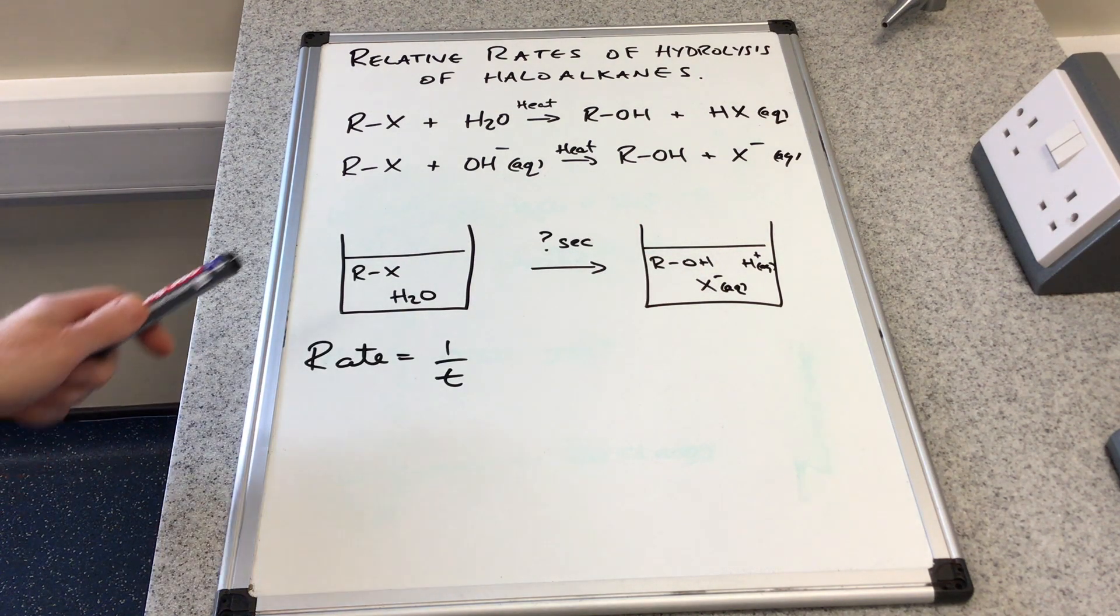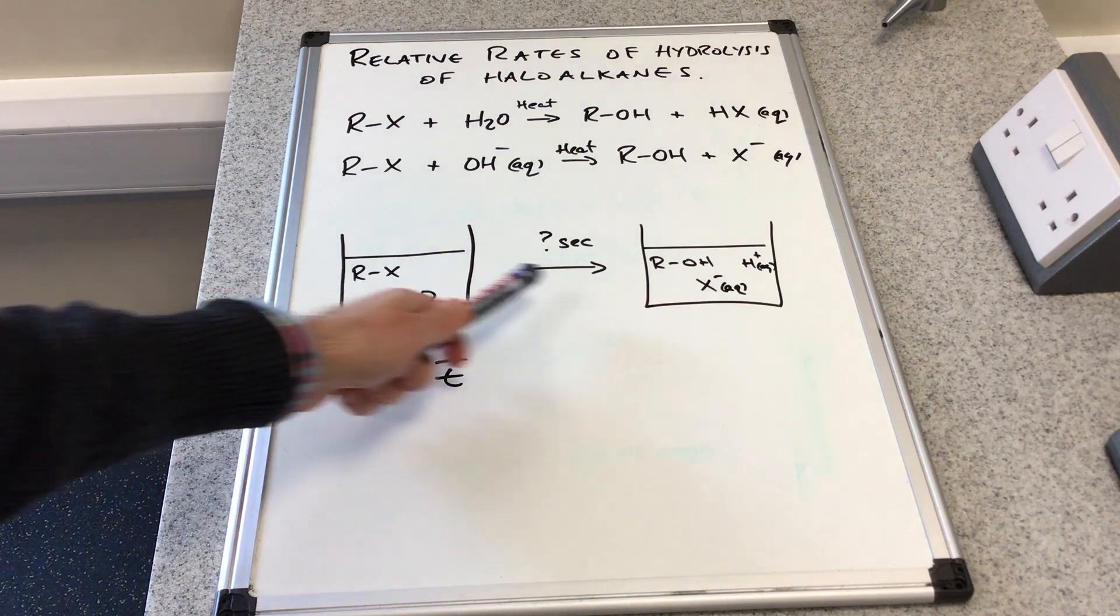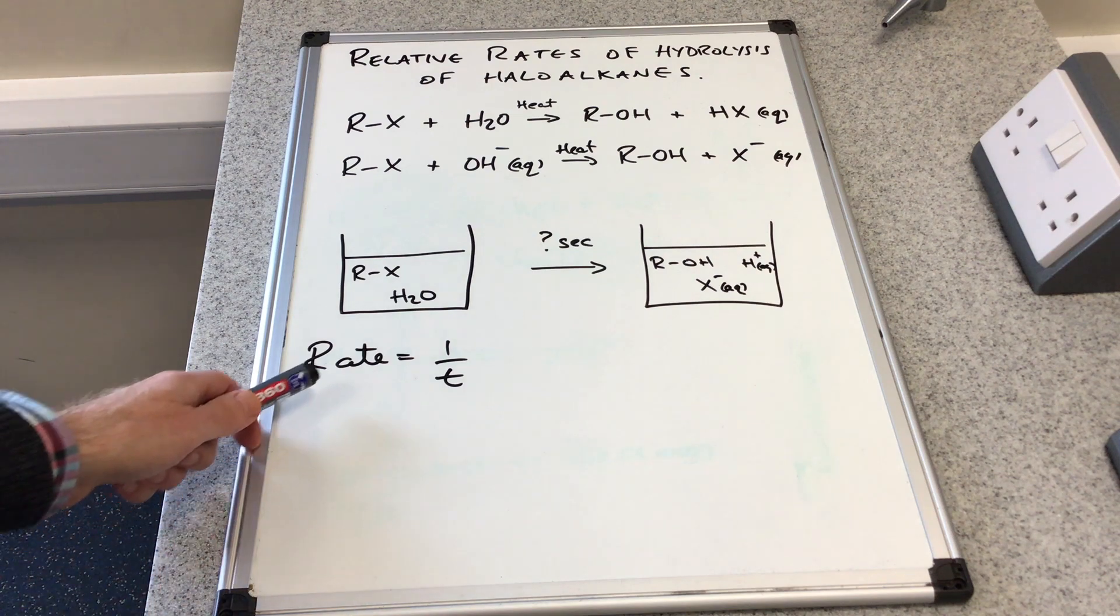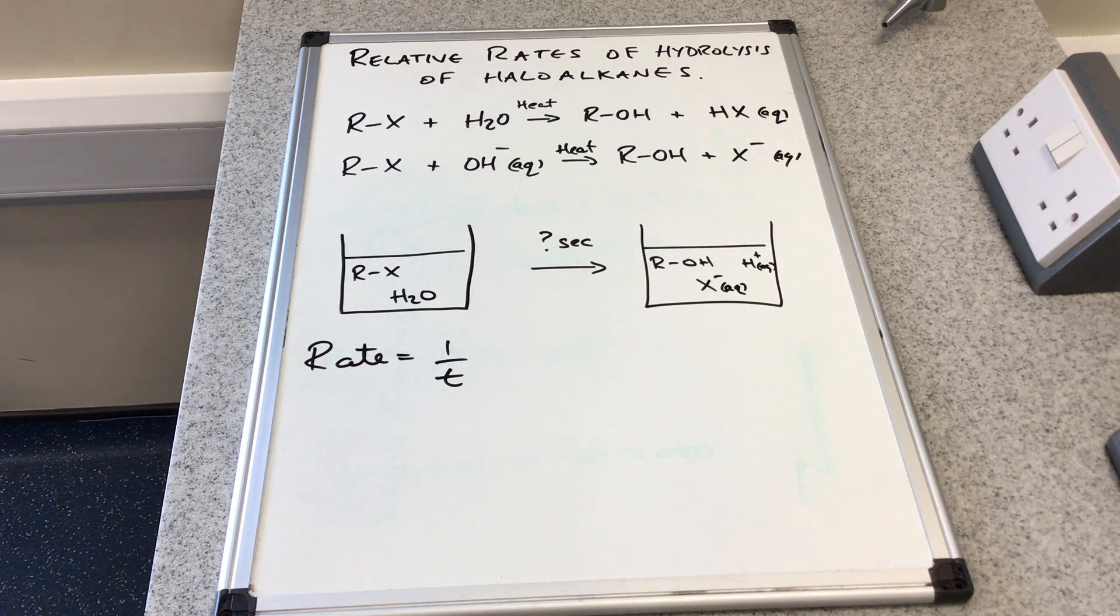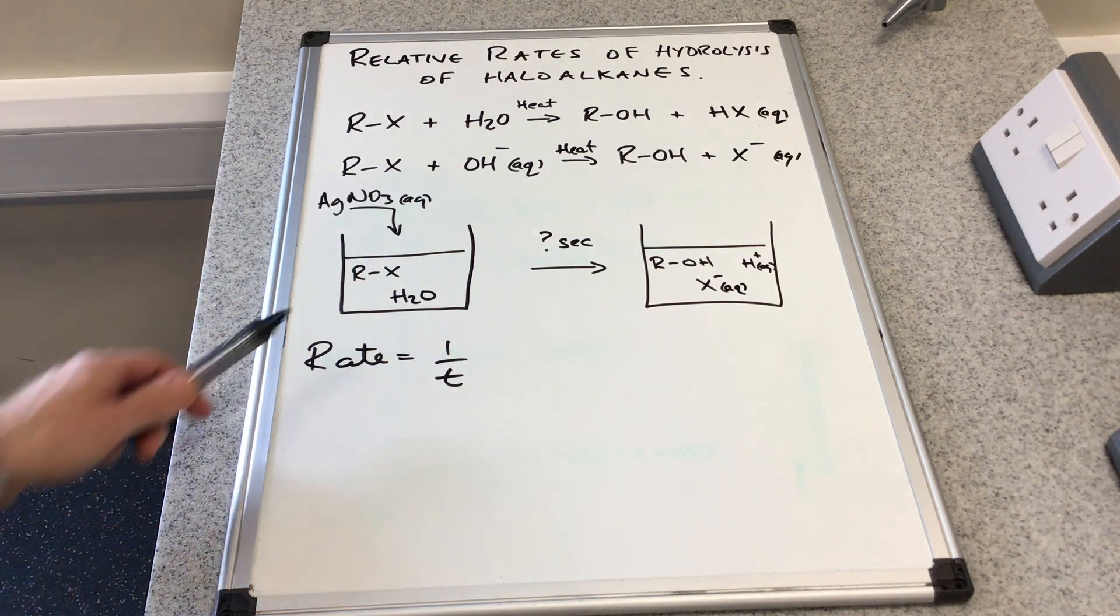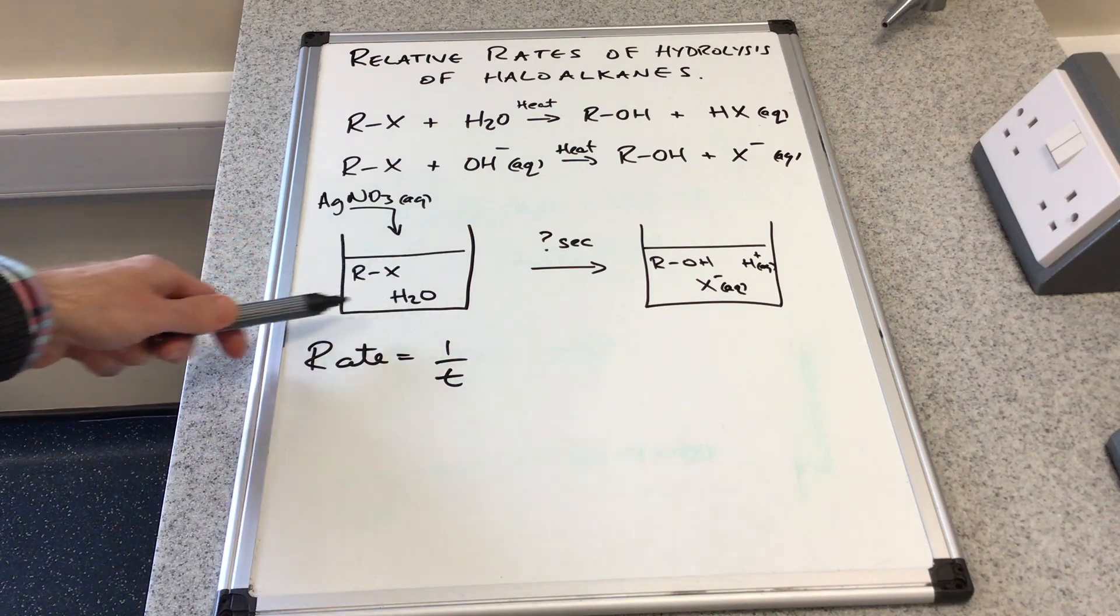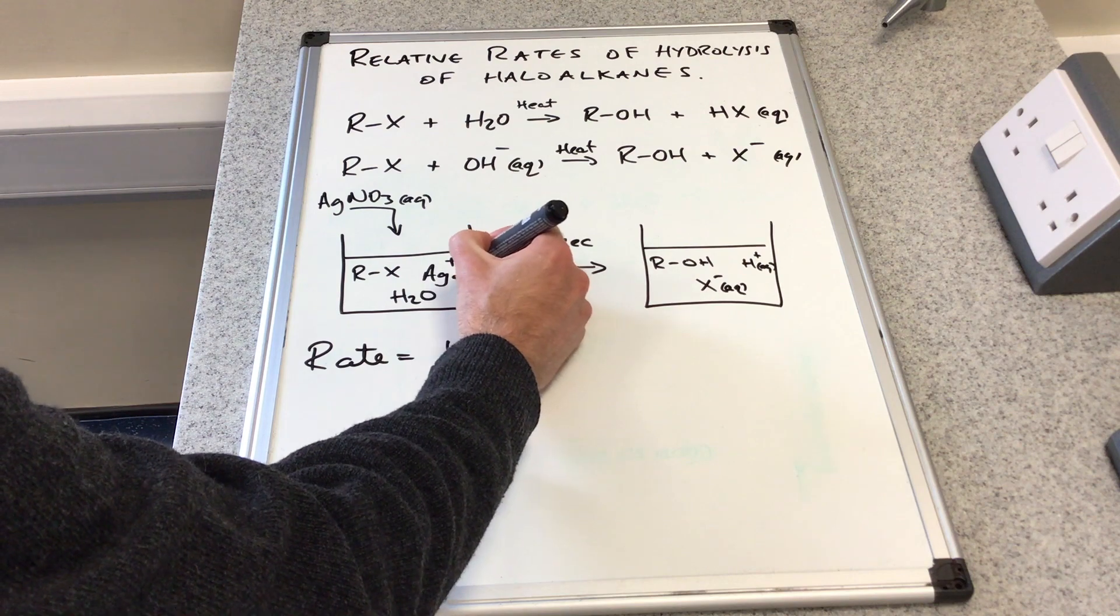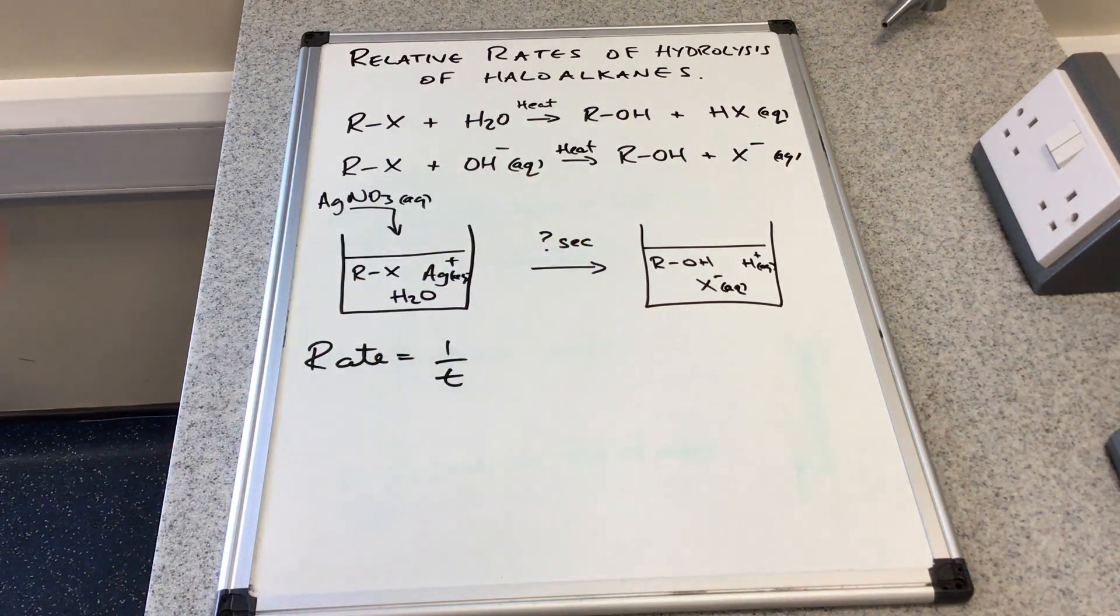We need a way of working out how long this reaction takes, and then to turn that into a rate we just do one divided by that time. The way we do that is we add some aqueous silver nitrate solution to the beaker at the start, introducing silver ions.